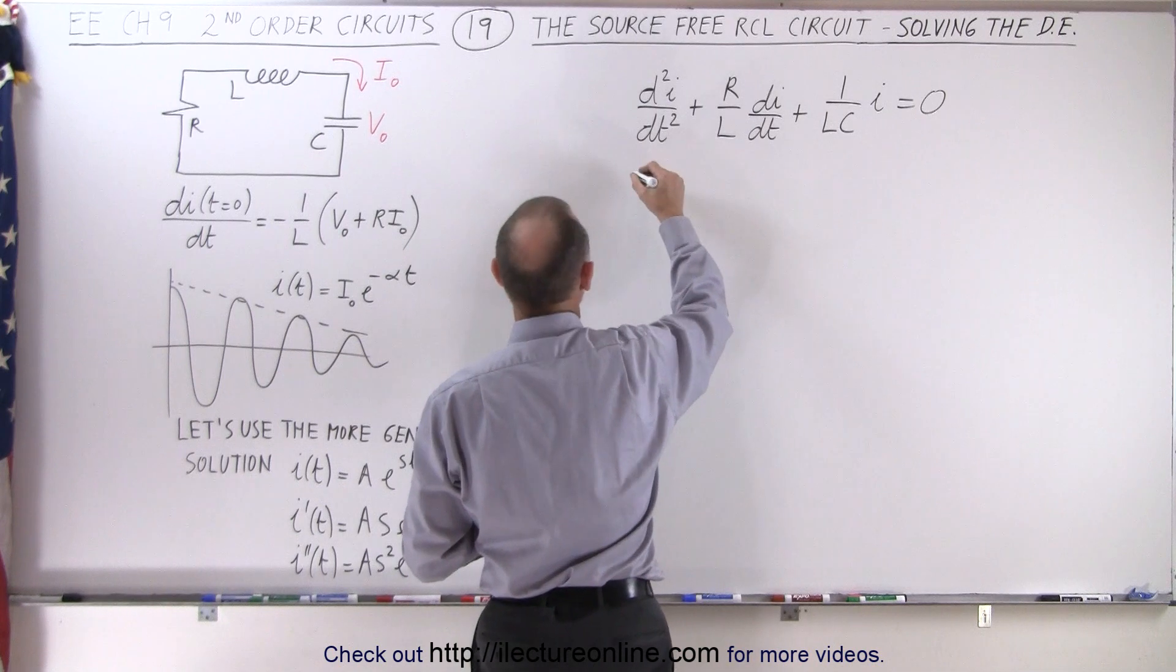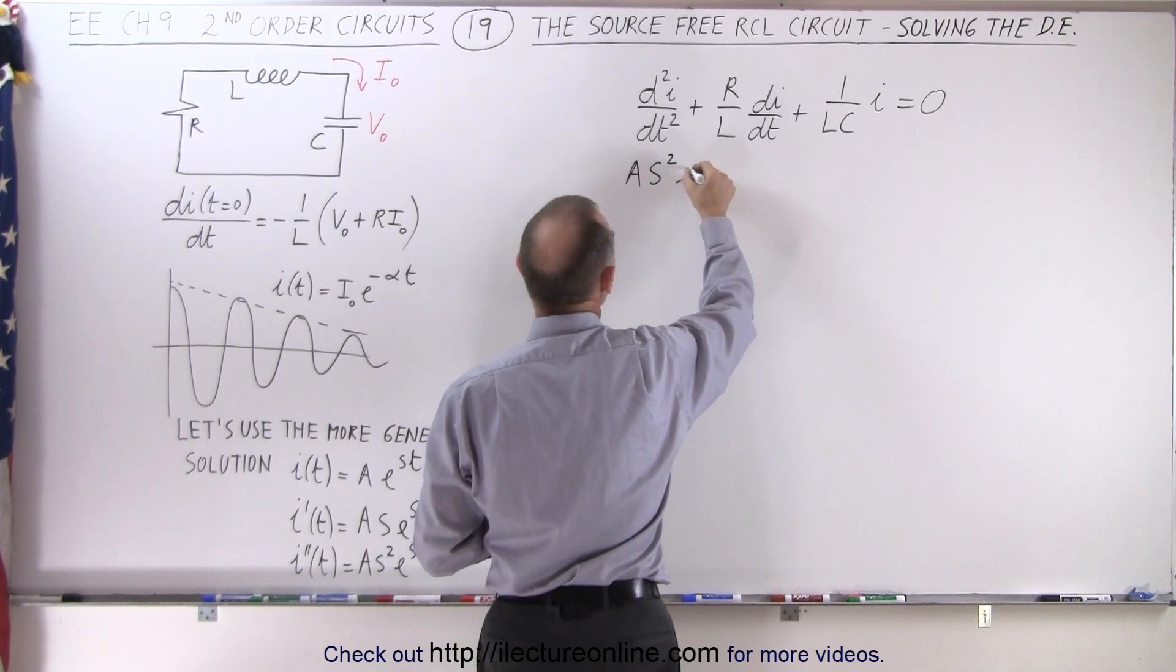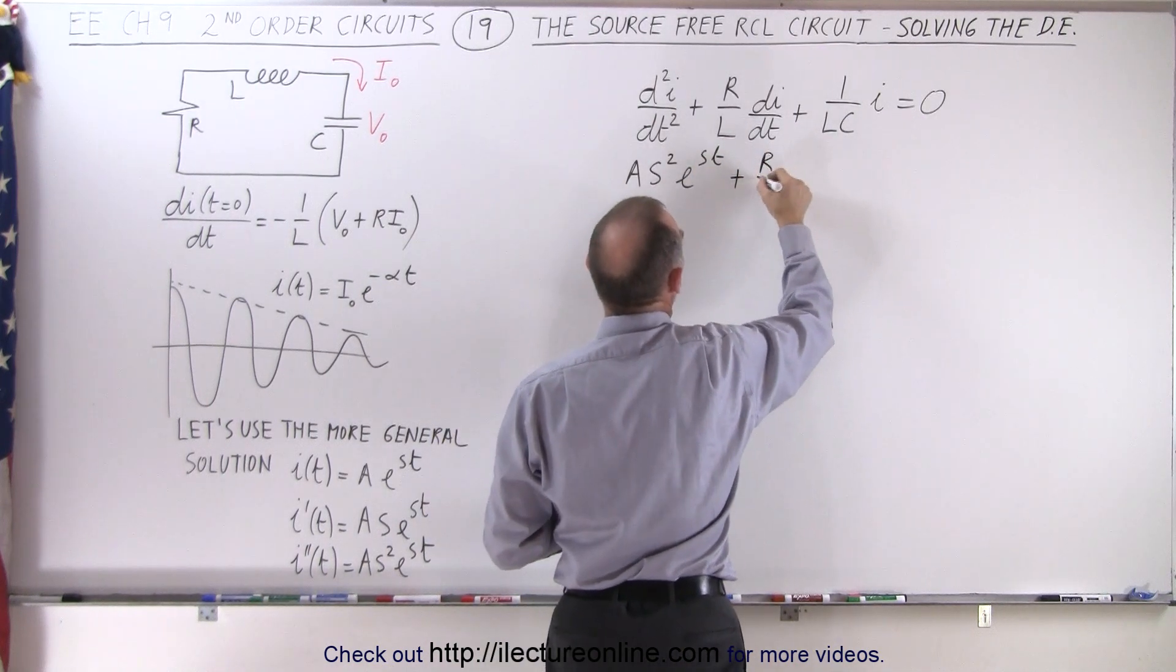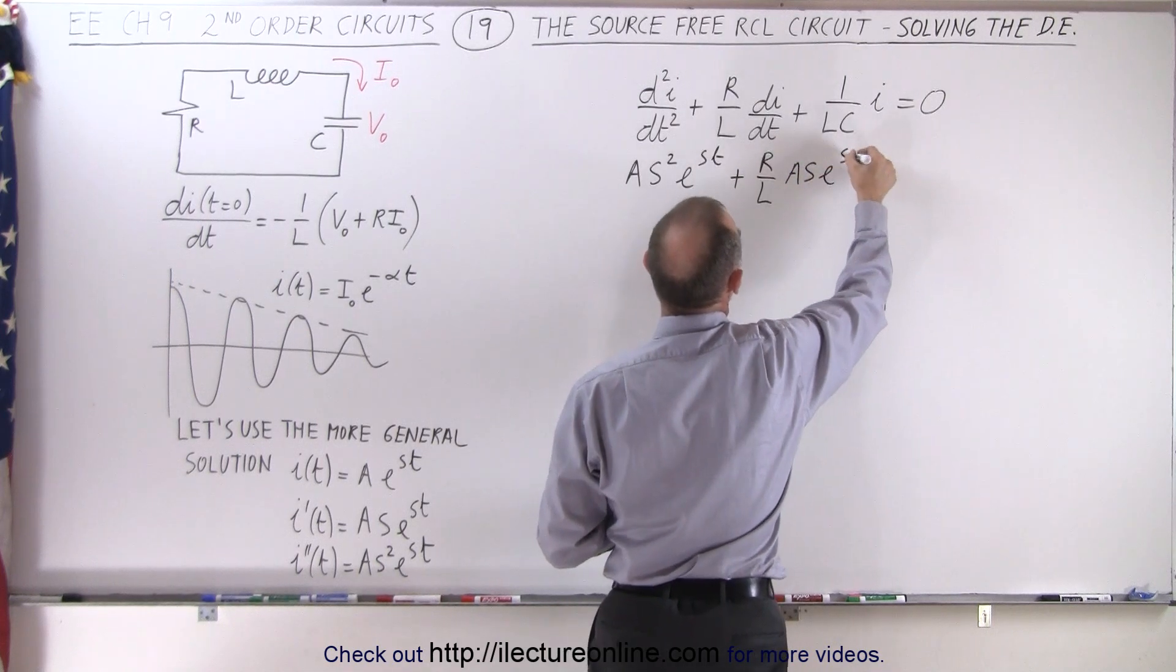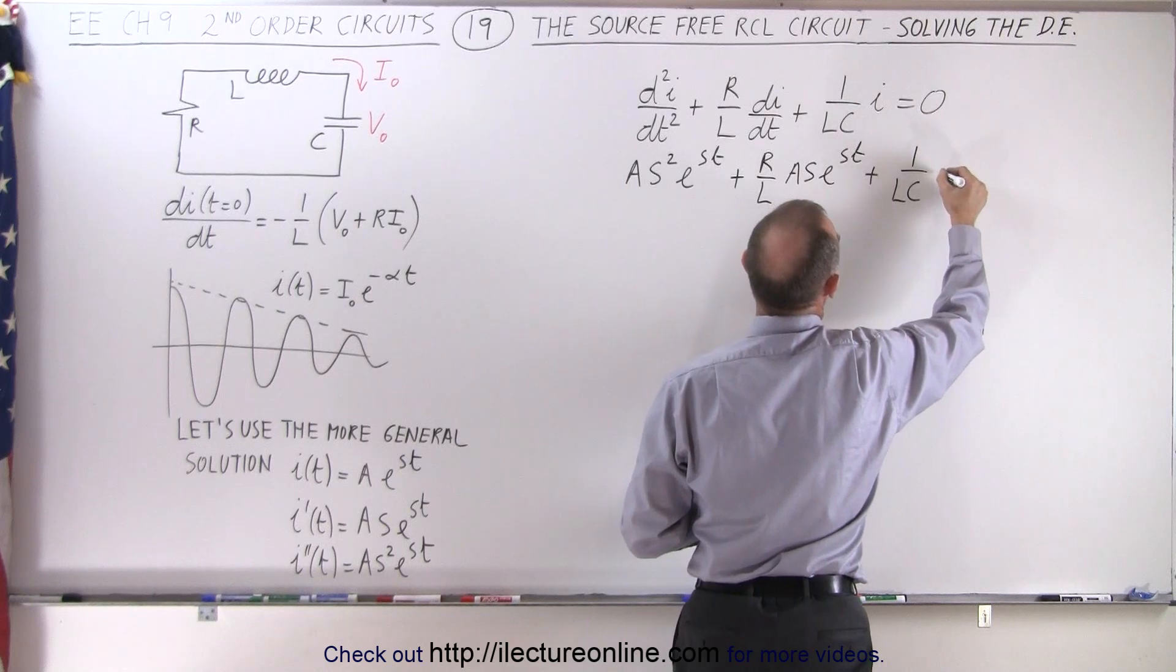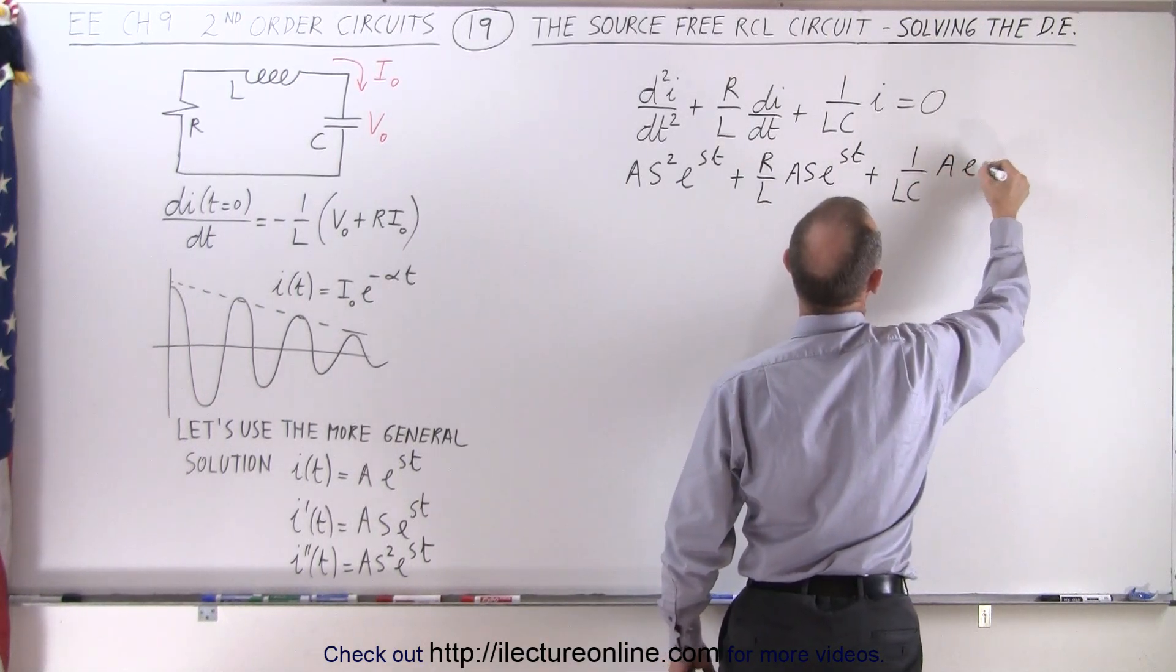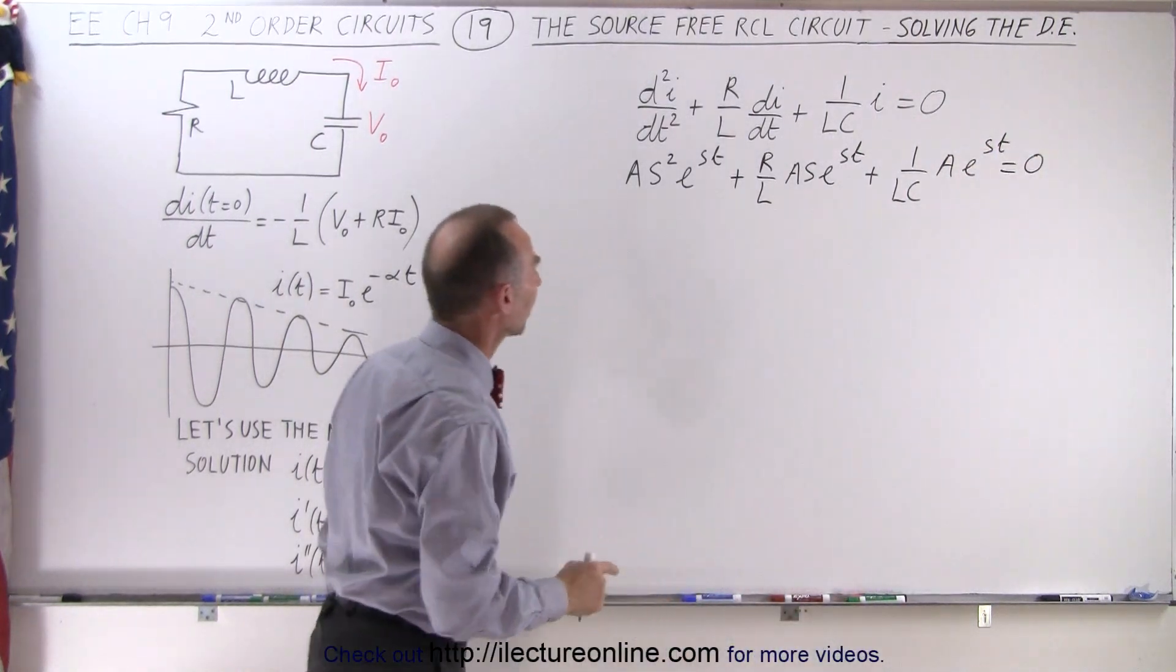So for the second derivative, we get a s squared times e to the st plus r over l times a s e to the st plus 1 over lc times a times e to the st is equal to 0. So all we did was plug in.